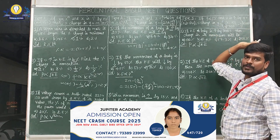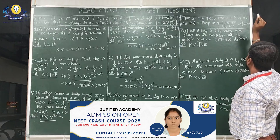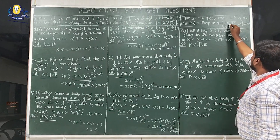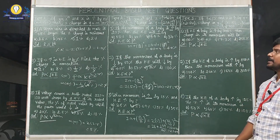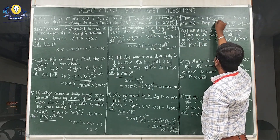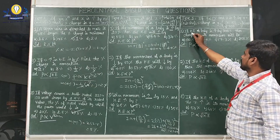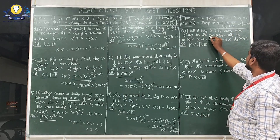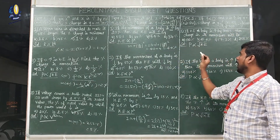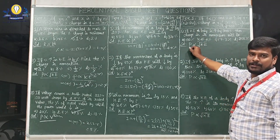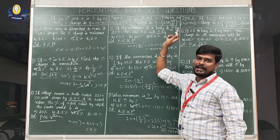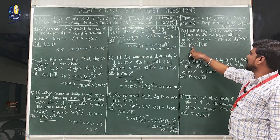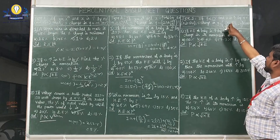Next is Type 3: if y is directly proportional to root x and x is increased by n percent, where n is greater than 10%, the percentage change in y = [√((n+100)/100) − 1] × 100%. First question: if the kinetic energy of a body is increased by 300%, find the change in its momentum. Since p ∝ √KE, n = 300%.